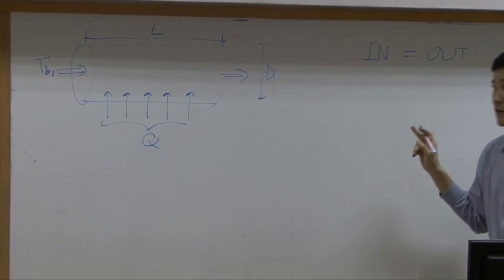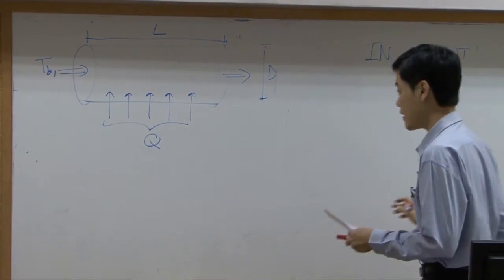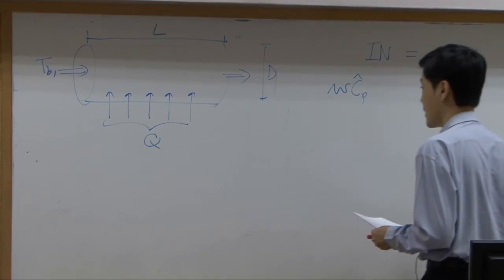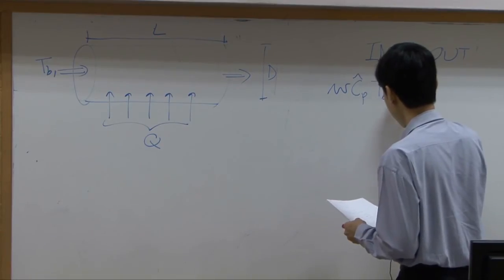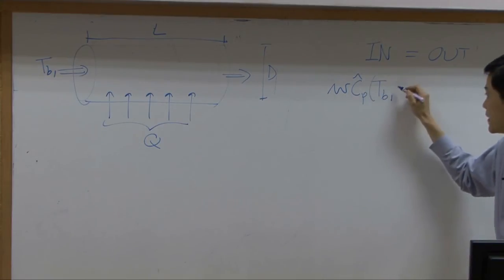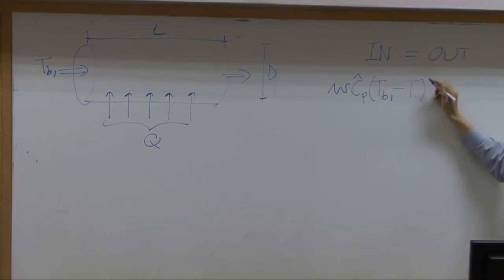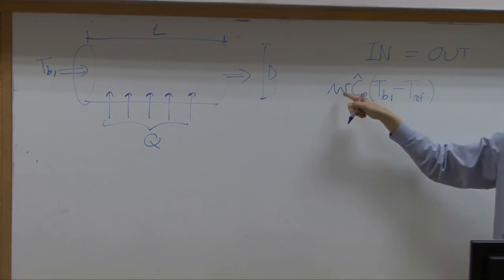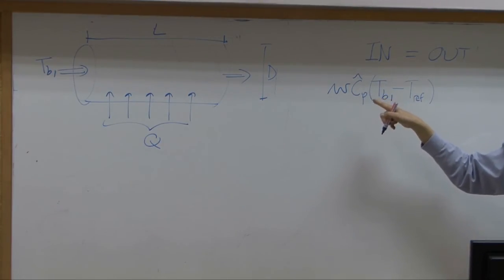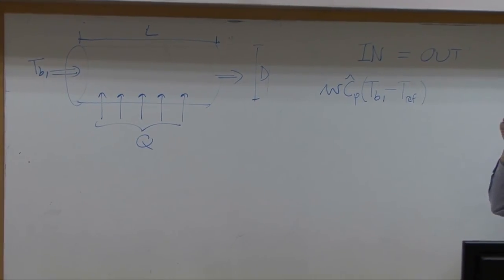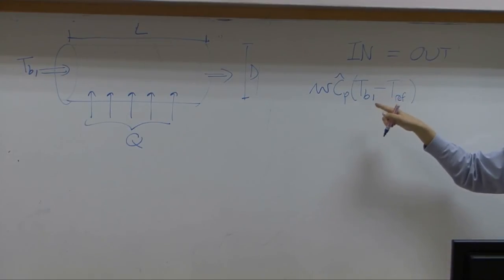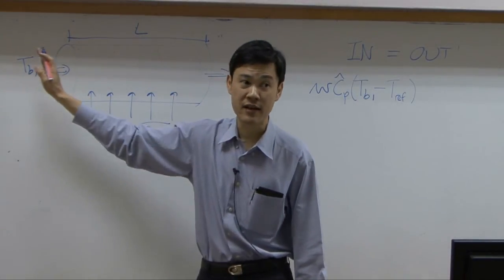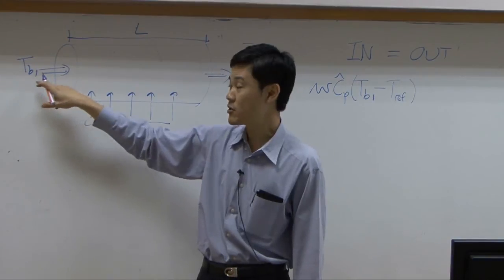There'll be two inputs. First would be energy coming with the fluid. So that amount of energy can be calculated by using enthalpy. Enthalpy of the fluid coming into the system is basically mass flow rate multiplied by specific heat capacity and then delta T. But don't be confused. Delta T here is a change in temperature from reference point to the actual temperature of the fluid. So if you assume that fluid here coming in at uniform temperature, that temperature is called Tb1.